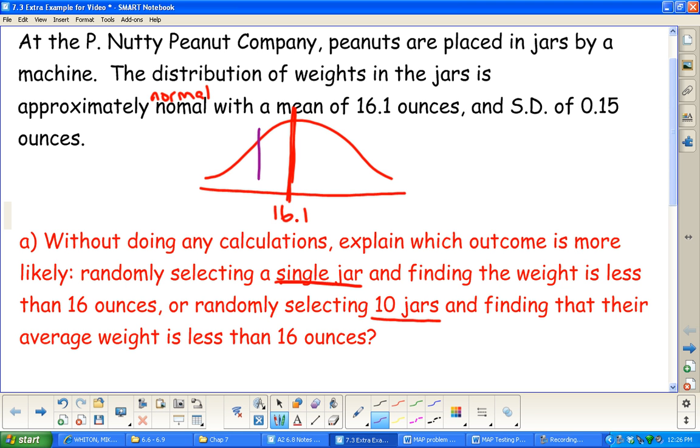In this case, it's more likely for a single jar to be a little bit farther away from the mean. The probability for a single jar being less than 16 is more likely to occur than if you were to average 10 jars. It's kind of like thinking like safety in numbers.